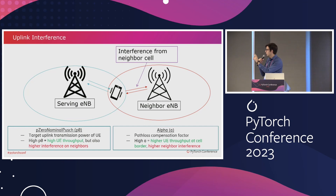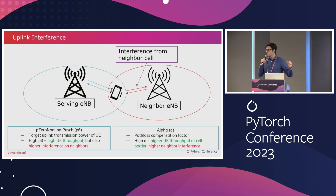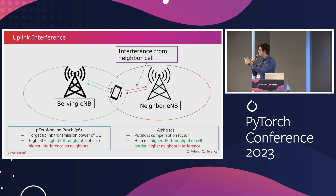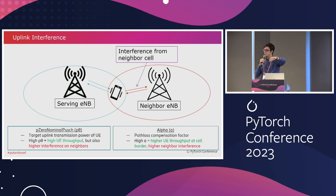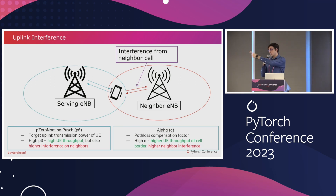The specific optimization we are going to do is uplink interference. Uplink interference is the interference that occurs when users try to transmit something to the network — uploading a file or a phone call. We have interference from the neighbor when the neighbor has a lot of users at the border of the cell. Our users are transmitting information to the antennas, but the users of the neighbor cell are also transmitting to our antennas, causing noise.